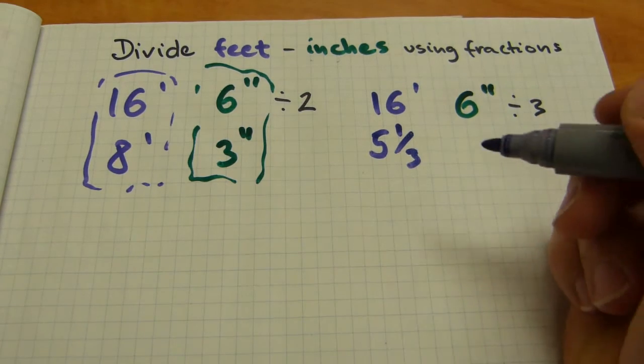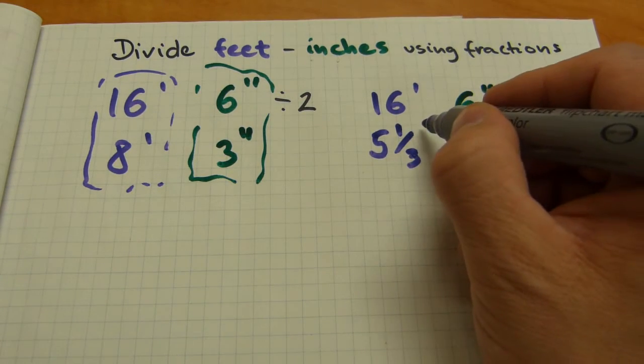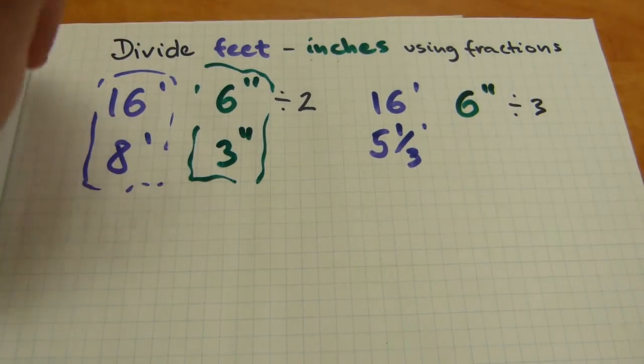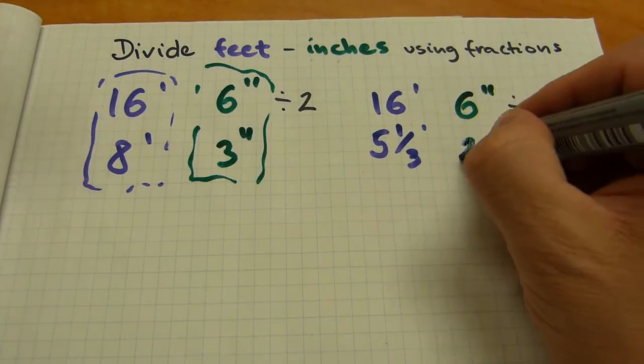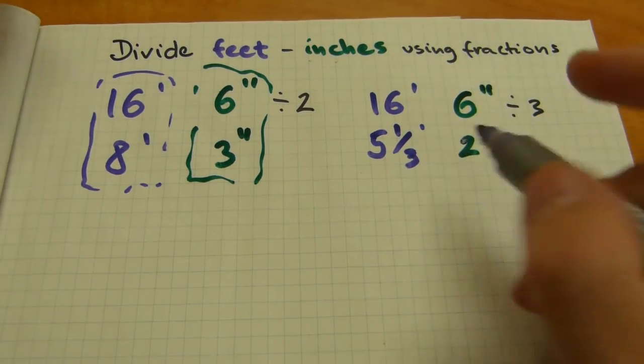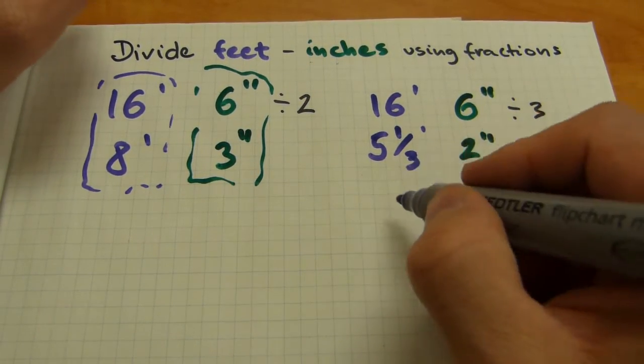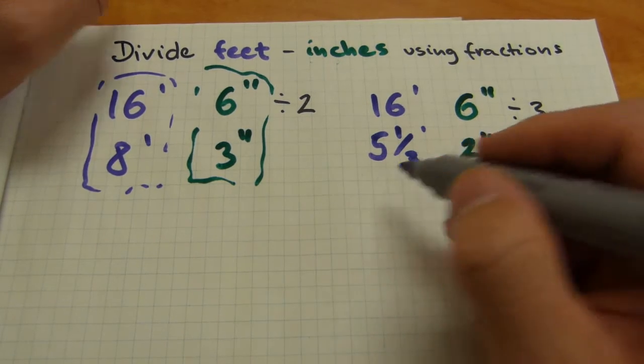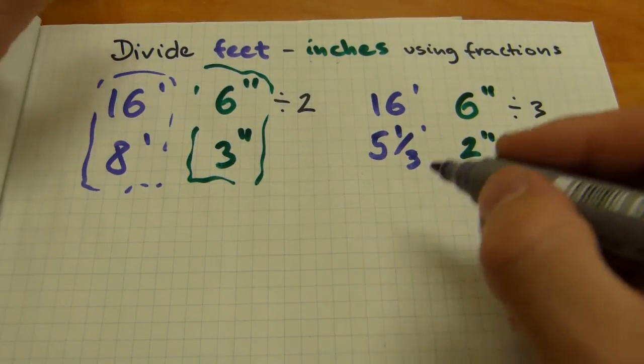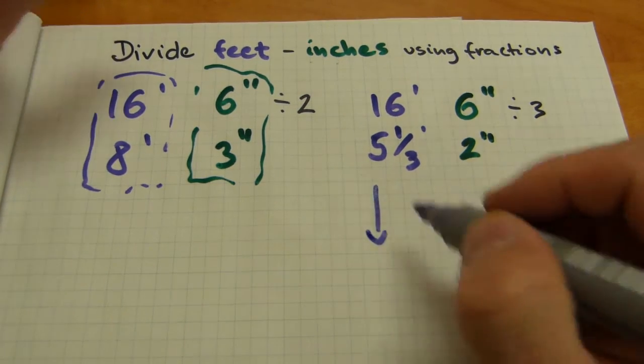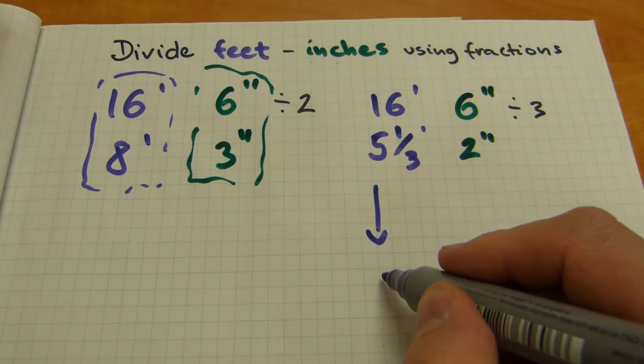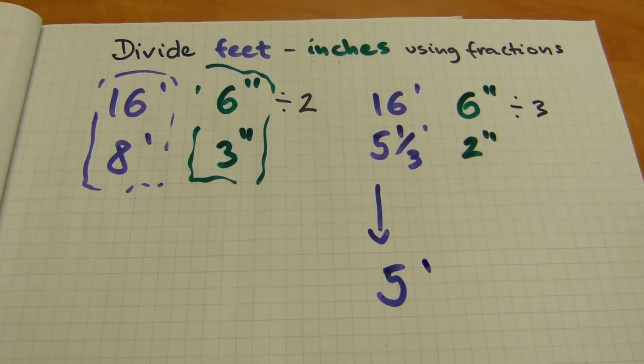3 goes into 16 five times and we have a remainder of 1. 5 by 3 is 15 and 1 is the remainder, that's 1 third of a foot. Do keep in mind, these are fractional feet, it's a mixed number. And 6 divided by 3 is just 2 inches, that's straightforward. So this 1 third of a foot we need to deal with because there is no such measurement as 5 and a third feet and 2 inches. But the 5, the leading number in this mixed number, the whole number, drops down into the final answer, so that's 5 feet.